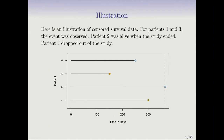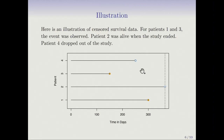Here's an illustration with four patients. Solid circles represent failures or deaths — patient three died at one point, patient one at another. There are two kinds of censoring shown: one patient was censored because the study ended, and another was censored because they dropped out of the study for some reason. Both are censoring events.